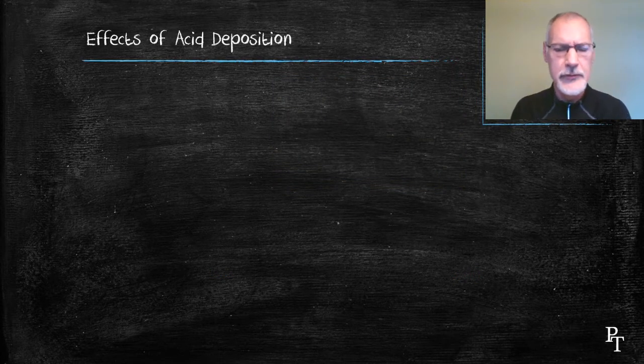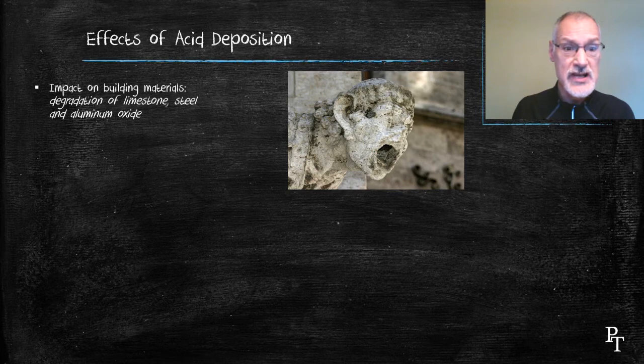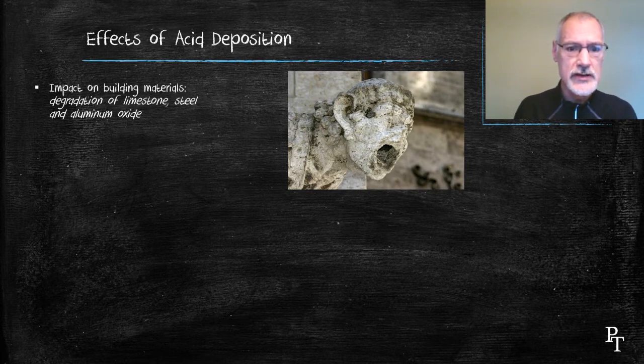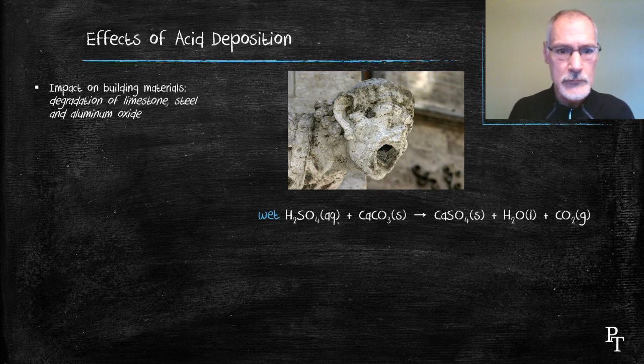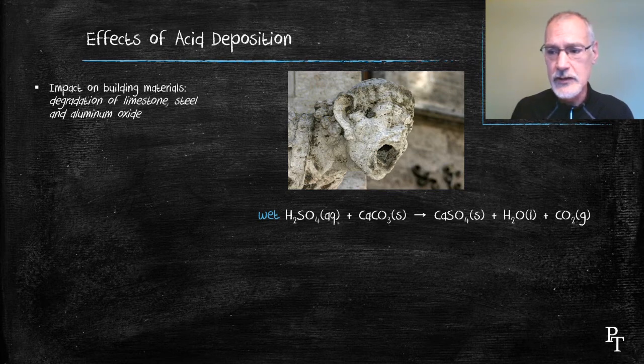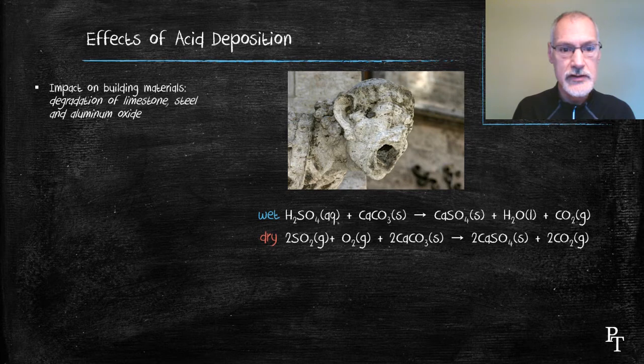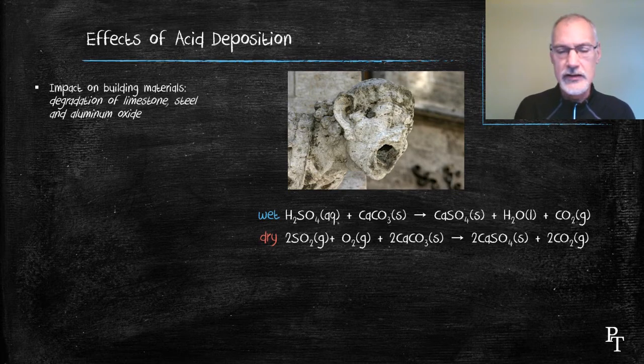The effects of this acid deposition are quite noticeable. First of all, they can have an impact on building materials, such as limestones and many metals. For instance, here we can see an aged sculpture that was made of limestone, and that limestone has reacted with the acid precipitation. Here's an example of the wet reaction that might be taking place. The sulfuric acid present in the rain reacts with calcium carbonate. We know that from carbonates, we produce carbon dioxide and water, and a salt, in this case calcium sulfate. We can also get a dry reaction happening. In this case, sulfur dioxide gas plus oxygen in the presence of light can react directly with the calcium carbonate to produce calcium sulfate and carbon dioxide.